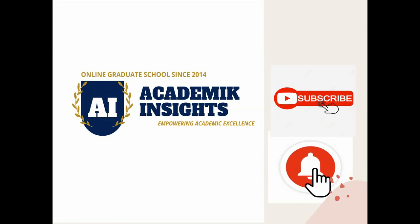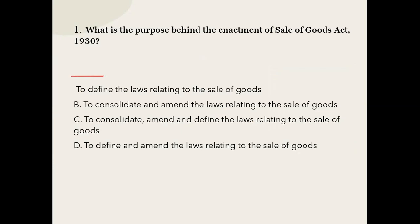Now starting with the first question of this particular subject. Q1: What is the purpose behind the enactment of Sale of Goods Act 1930? The options are: to define the laws relating to the sale of goods; to consolidate and amend the laws relating to the sale of goods; and to define and amend the laws relating to the sale of goods. The correct option is: to define and amend the laws relating to the sale of goods.